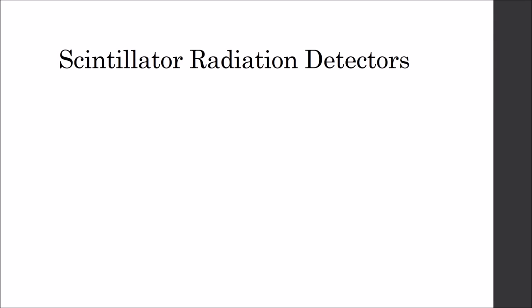A scintillator-based radiation detection system operates by having a scintillator react with radiation to produce light. A photo multiplier is then used to detect that light and produce electrical output.